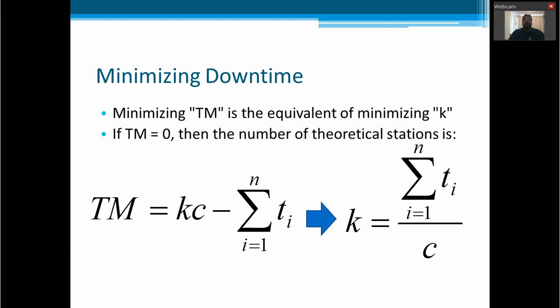So the main goal here is to minimize the downtime, to have a downtime of zero. And in terms of formula, if we make the downtime zero and we calculate the number of stations, the ideal number of stations, this will be the summatory of all the individual times divided by the cycle time.